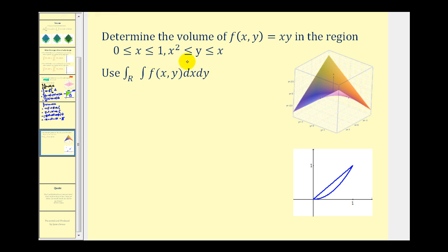Our region of integration is bounded by the functions y equals x squared and y equals x. Here's y equals x and here's y equals x squared. The point of intersection here was the point (1, 1). So here's our region of integration. Let's set this up using the given order of integration.